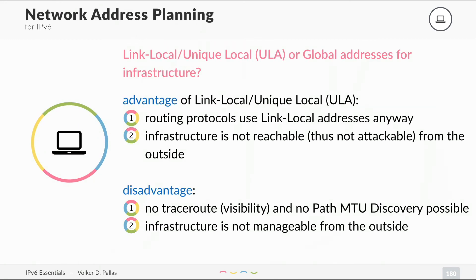Another design consideration is whether to use link local or unique local addresses, or global addresses for your infrastructure. There is an advantage to using link local or unique local addresses — routing protocols use link local anyway, and your infrastructure would not be reachable from the outside, meaning nobody can attack it. But the disadvantage is there is no traceroute possible, no visibility. If you do a traceroute from the outside and the inside addresses are not routed, you can only see asterisks. Also, there is no path MTU discovery possible, which might be a problem for most applications.